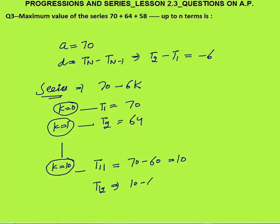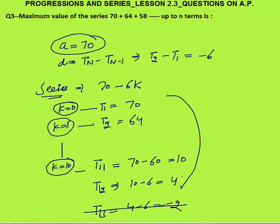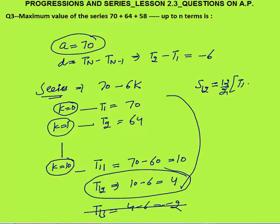The 13th term would be 4 minus 6 equals minus 2 - I don't need to include this as it makes the sum less. So I add the first 12 terms. First term is 70 and the last (12th) term is 4. After this the series becomes negative. Sum of first 12 terms equals 12 by 2 times (first plus last) equals 6 times (70 plus 4) equals 6 into 74 equals 444, which is the final answer.